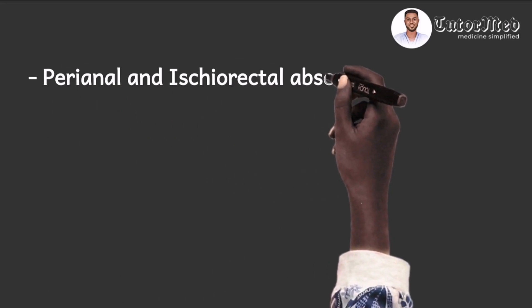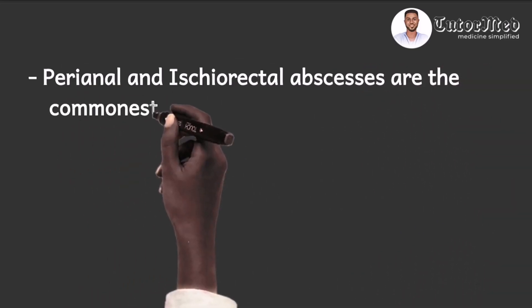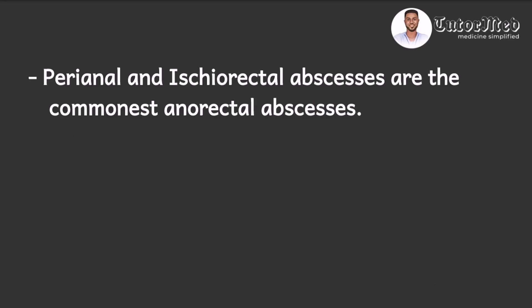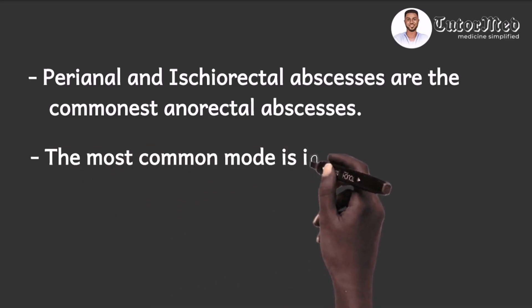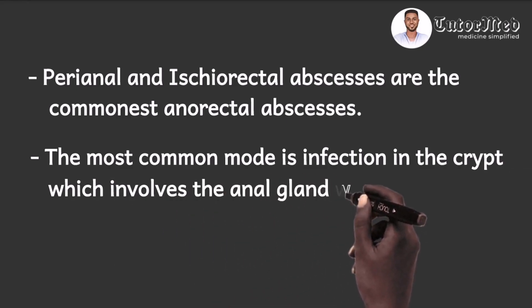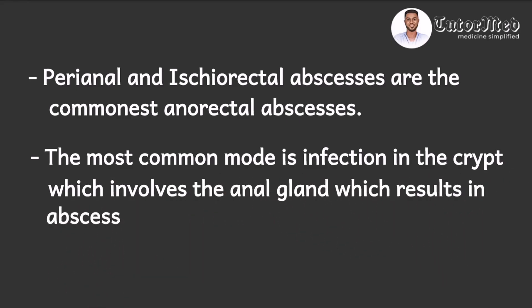Of all the abscess types, perianal and ischioanal or ischiorectal abscesses are the most common anorectal abscesses — perianal being first and then followed by ischioanal or ischiorectal, as documented in Badger. The most common mode is infection in the crypt which involves the anal gland and ultimately results in abscess formation. It is important to rule out immunosuppressive states like HIV and AIDS, and then poorly controlled diabetes, in patients who present with anorectal abscesses.